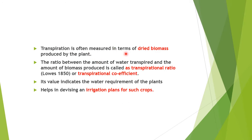Transpiration is measured in terms of dry biomass produced by the plant. The ratio between the amount of water transpired and the amount of biomass produced is called the transpirational ratio or transpirational coefficient. Its value indicates the water requirement of the plant — how much transpiration occurs relative to the dry or organic matter produced. It helps in devising an irrigation plan for crops.